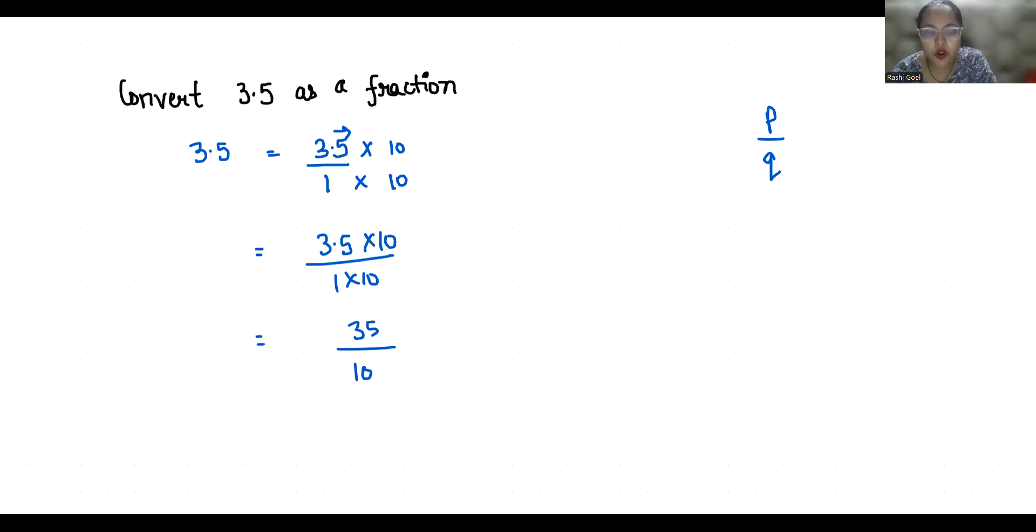Now it's in fraction form but we are going to reduce it by dividing by 5, because the highest common factor of 35 and 10 is 5. So we divide by 5, which gives us 7 by 2.